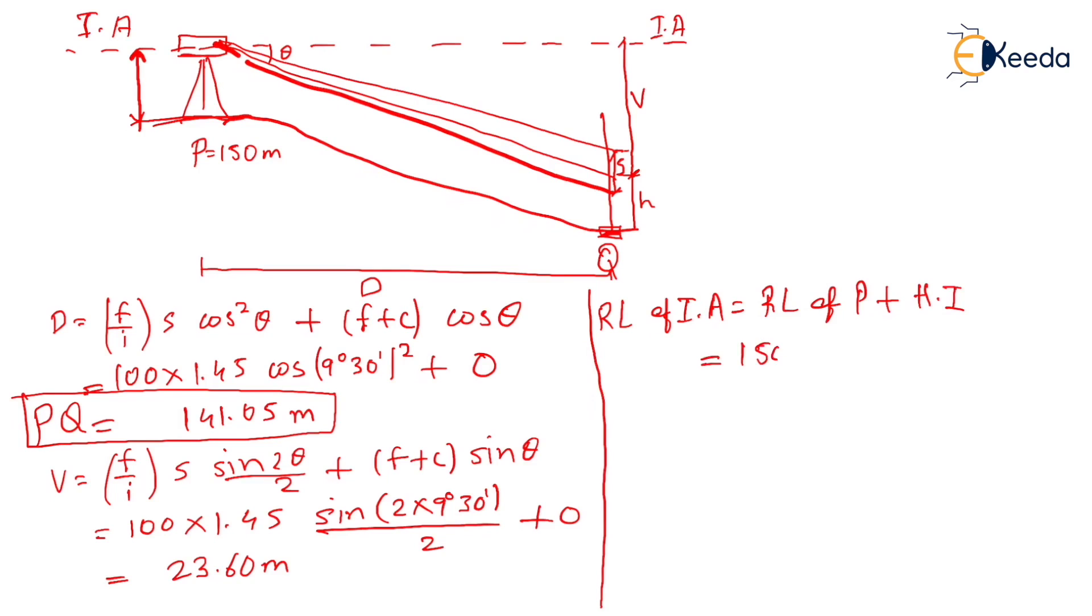The formula will be RL of P, the known point, plus HI, the height of instrument. So RL of P is 150 plus height of instrument HI is given as 1.38, so that will be 151.38 meters. Now we are standing on this datum line, that is your instrument axis.